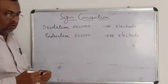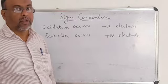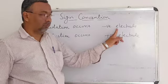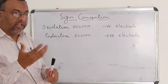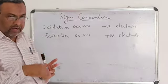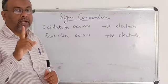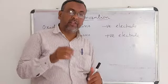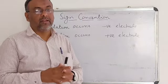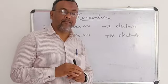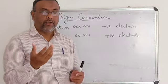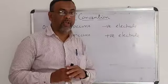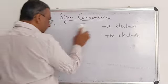Any electrode where electrons are liberated or donated acts as a source of electrons — that is the negative electrode. The electrode where electrons are absorbed or gained, where reduction occurs, is the positive electrode. For example, in a galvanic cell, at the zinc electrode oxidation occurs, so zinc is the negative electrode. Copper undergoes reduction, taking up electrons, so copper is the positive electrode.